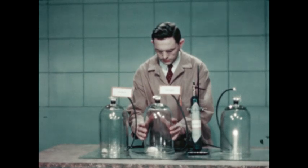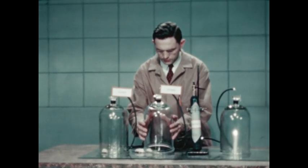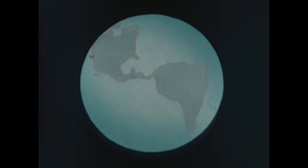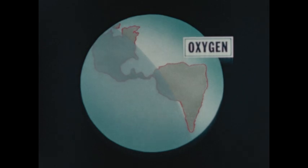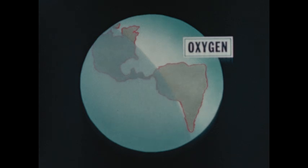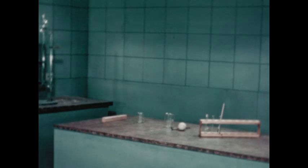We have seen that oxygen supports the combustion of fuel and how important it is to living organisms. Fortunately, the earth's crust is almost half oxygen. Oxygen occurs in the free state in the atmosphere and in many chemical compounds such as water, minerals, and plant tissues. Air is about one-fifth oxygen and four-fifths nitrogen, with traces of other gases.